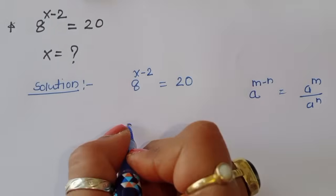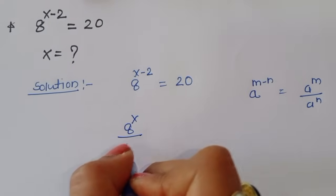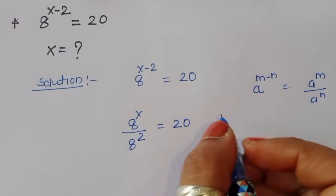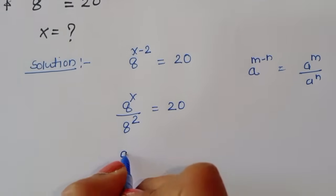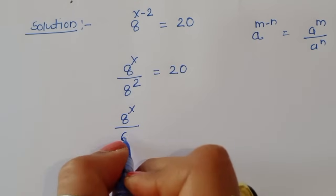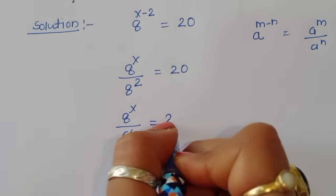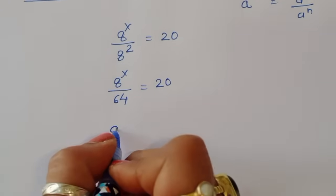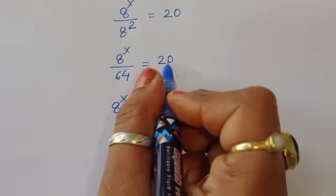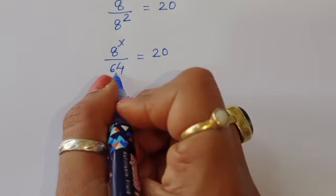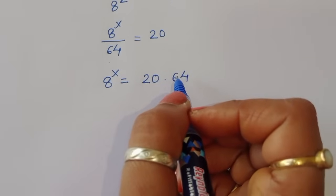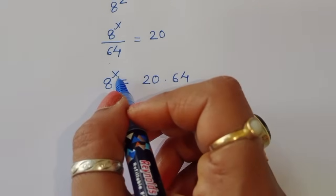So using this formula, we get 8 power x divided by 8 power 2 is equal to 20. Now 8 power 2 is 64, so 8 power x divided by 64 is equal to 20. By cross multiplication, 8 power x is equal to 20 times 64.